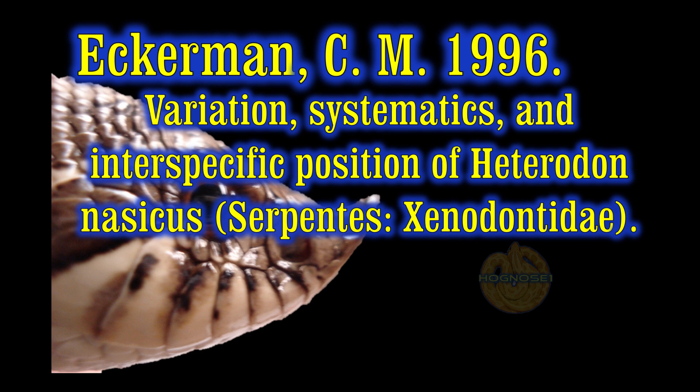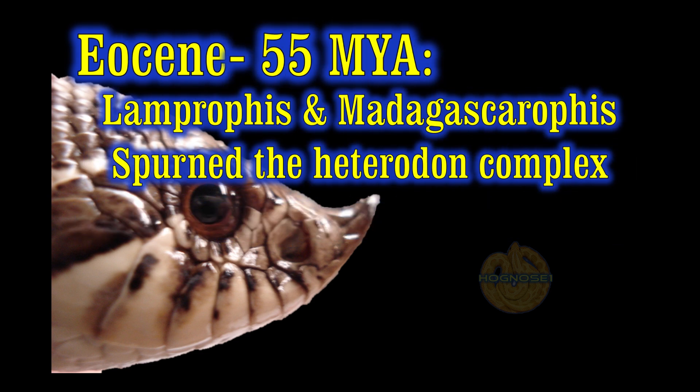In the Eocene epoch, around 55 million years ago, we see the first divergence — and these two are the house and cat-eyed snakes. Believe it or not, hognose snakes actually originated from house snakes and cat-eyed snakes. So many hognose enthusiasts I'm friends with are also interested in boiga, African house snakes, sharp-tailed snakes, ring-neck snakes, diadophis — these are all in that same classification that hognose snakes are believed to have originated from in the Eocene epoch.